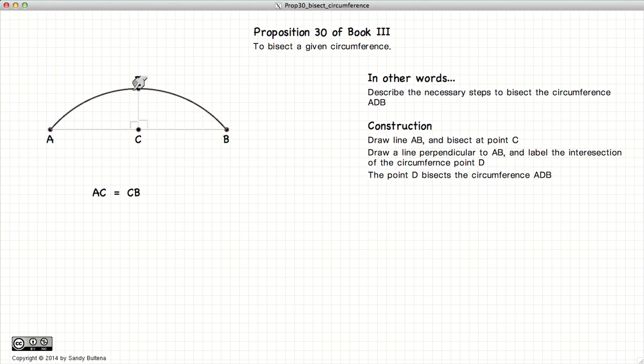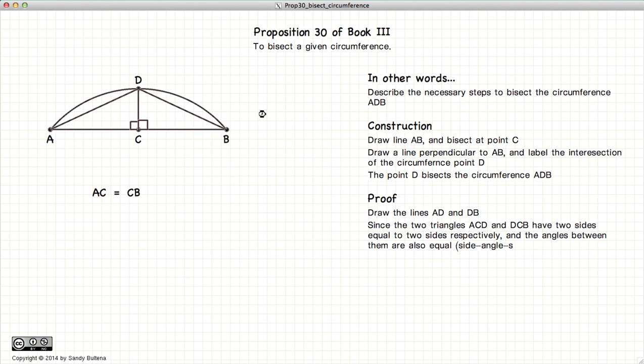Now D bisects the circumference AB. So to prove that this is actually true, let's draw the lines AD, DB, and look at these two triangles.